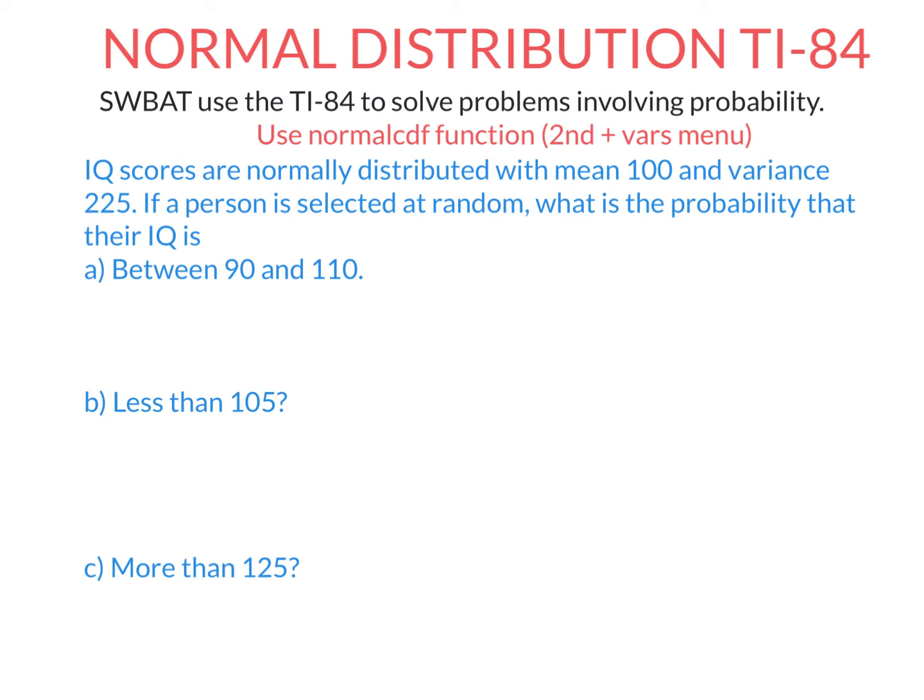So let's use that on this question here. So let's say IQ scores normally distributed, mean 100, variance 225, and we're gonna calculate the probability someone has an IQ within a range. So to start off with, note that all calculations involving the normal distribution involve standard deviation. So if the variance is 225, the standard deviation is the square root of that, which is just 15.